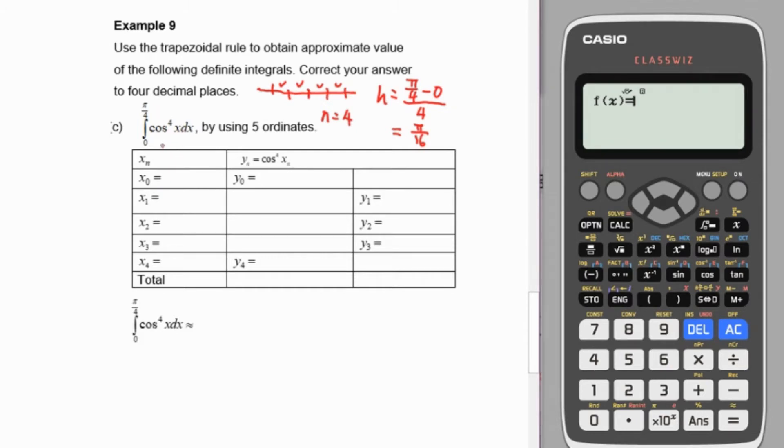The first ordinate is 0, the last ordinate is π/4. With height π/16, we get 0 plus π/16, then plus π/16 equals π/8, then plus π/16 equals 3π/16.